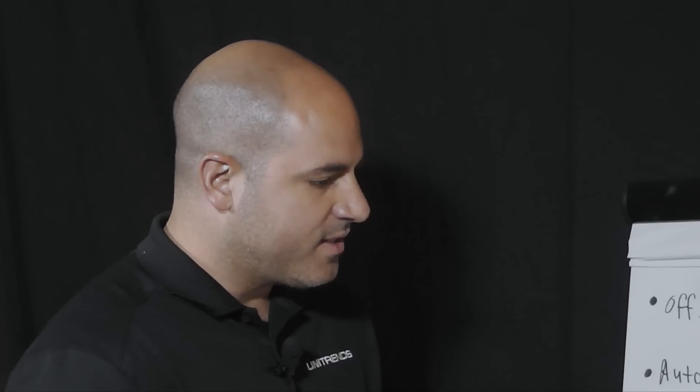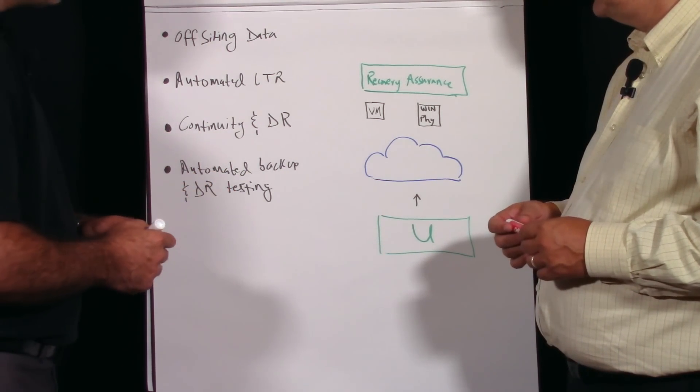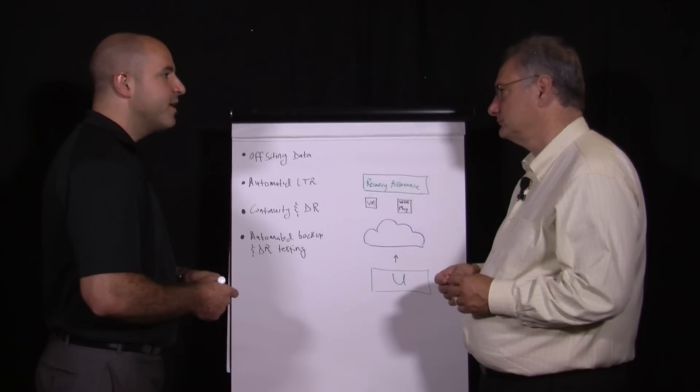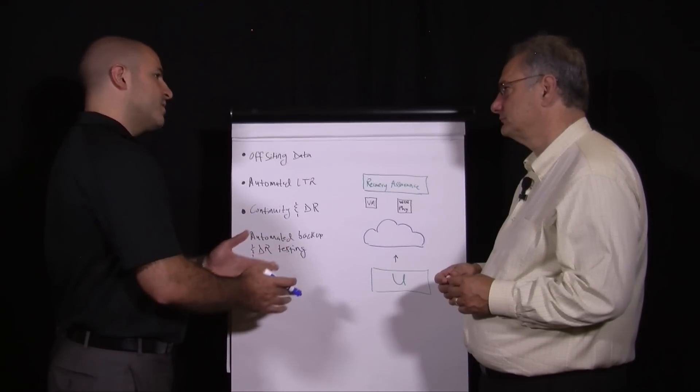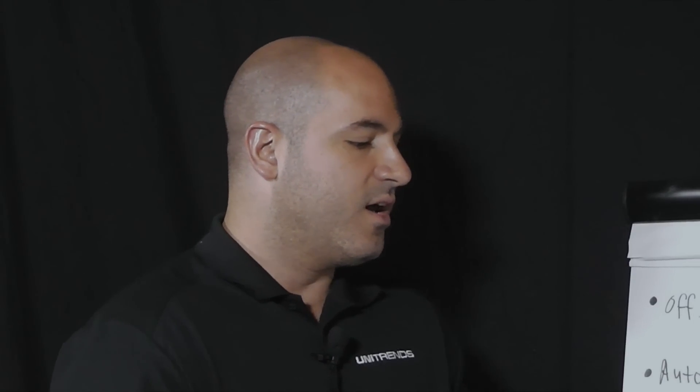What we're doing is fitting all the pieces of the puzzle together into one platform we call the connected continuity platform from Unitrends. At the base of that here is our appliance that's in the customer data center protecting the workloads, whether it's physical servers, we protect over 200 operating systems, whether it's virtual machines doing hypervisor based snapshots from the likes of VMware or Hyper-V or Citrix.